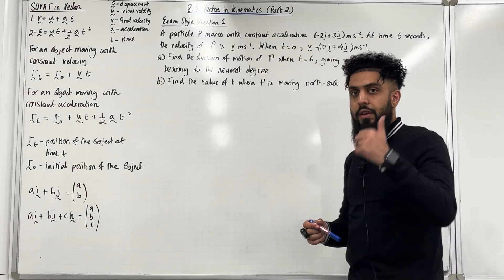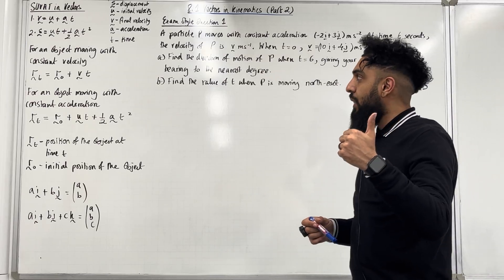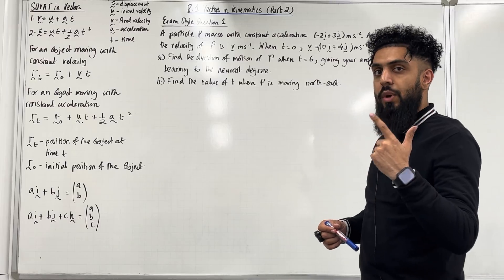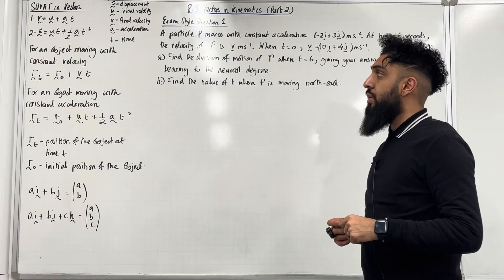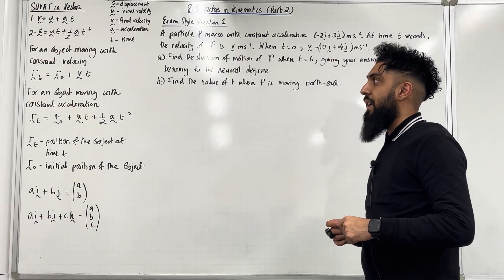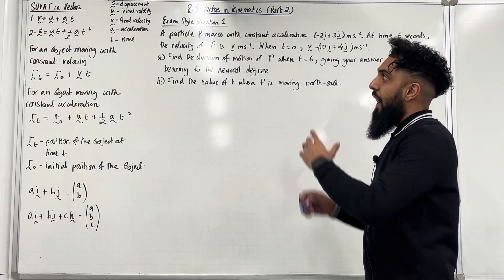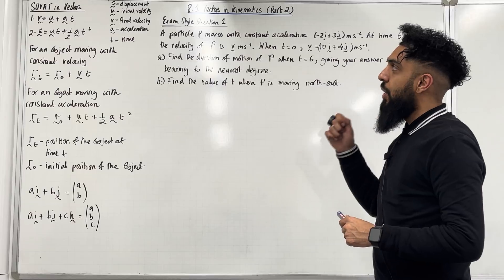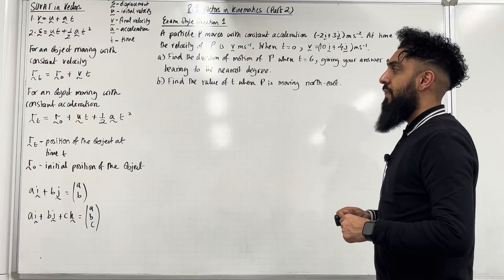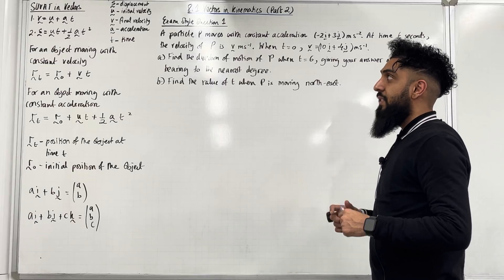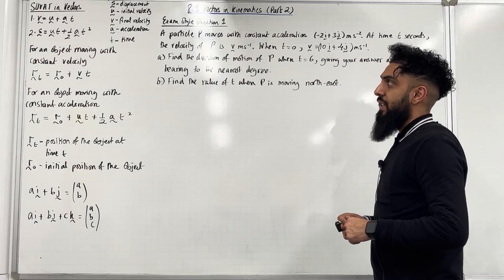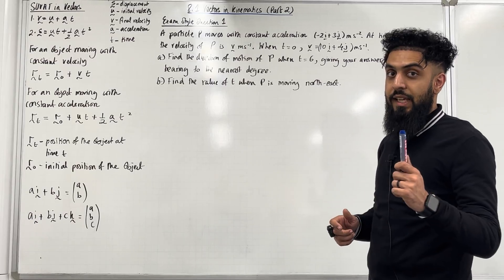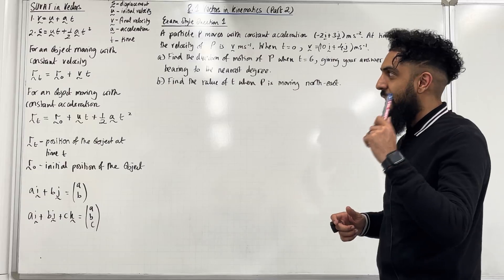SUVAT in vectors. Number 1: V is equal to U plus AT. Number 2: S is equal to UT plus a half AT squared. S is the displacement vector, U is the initial velocity vector, V is the final velocity vector, A is the acceleration vector, and T is the time.